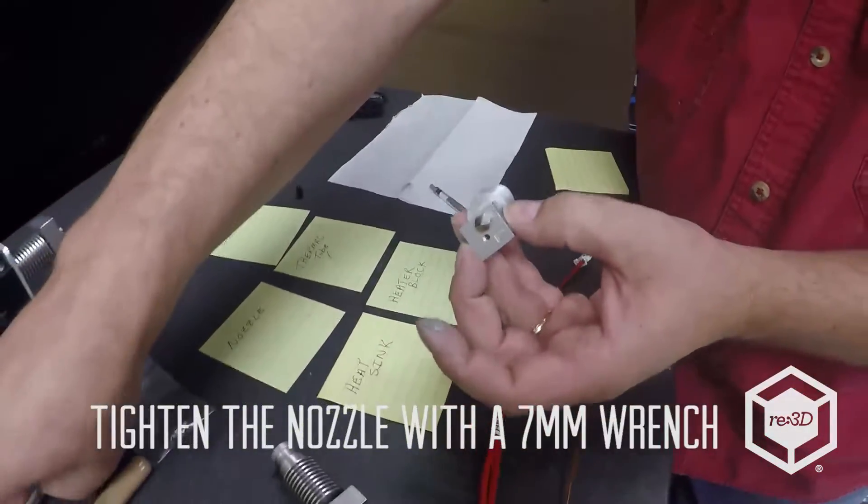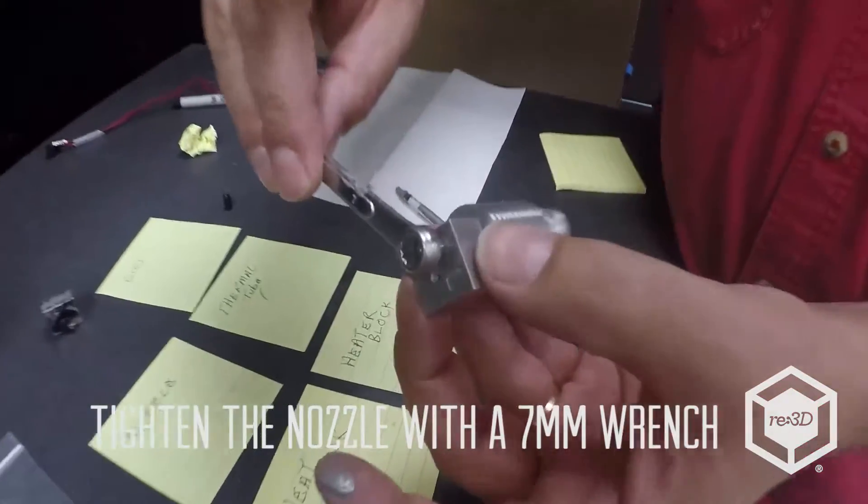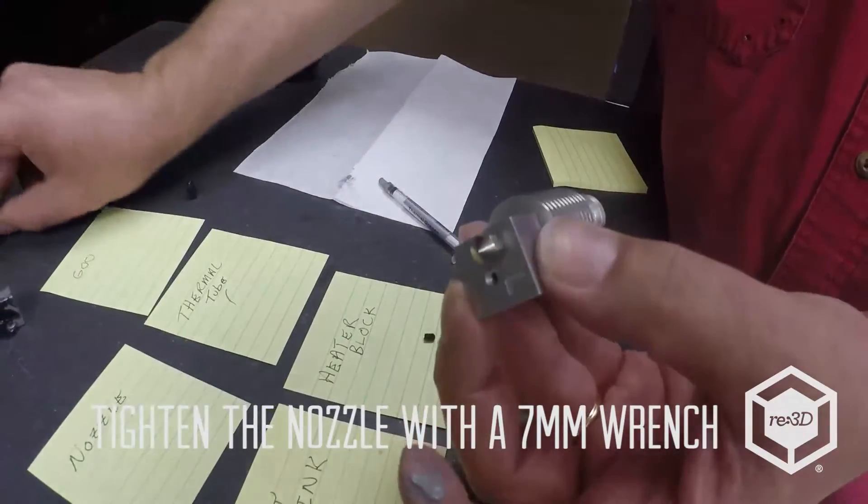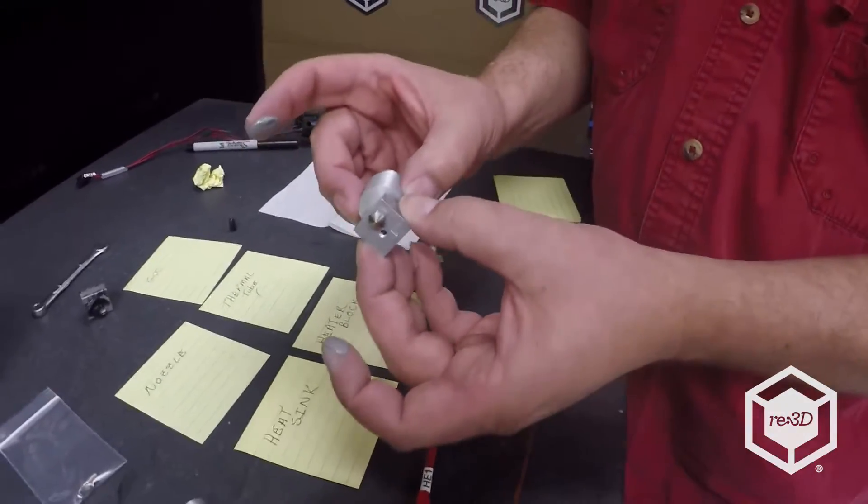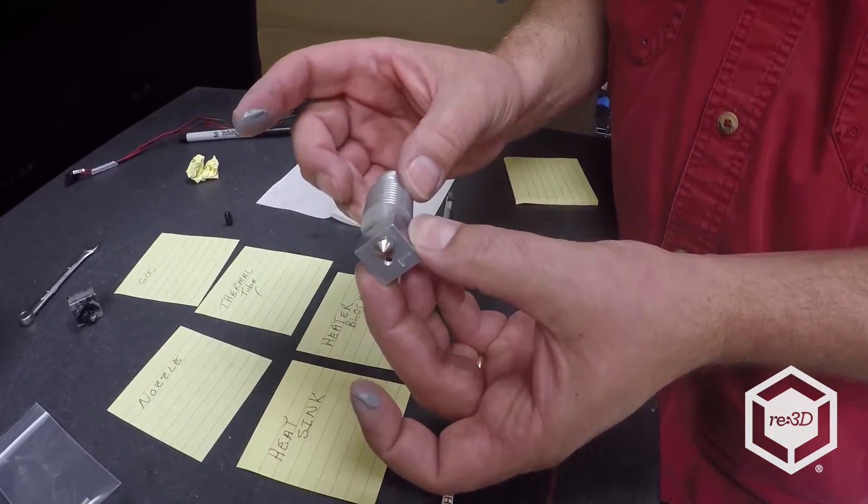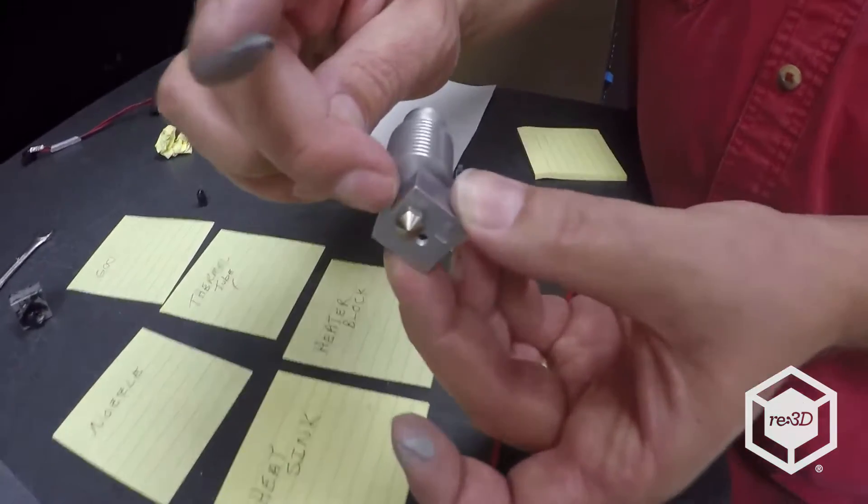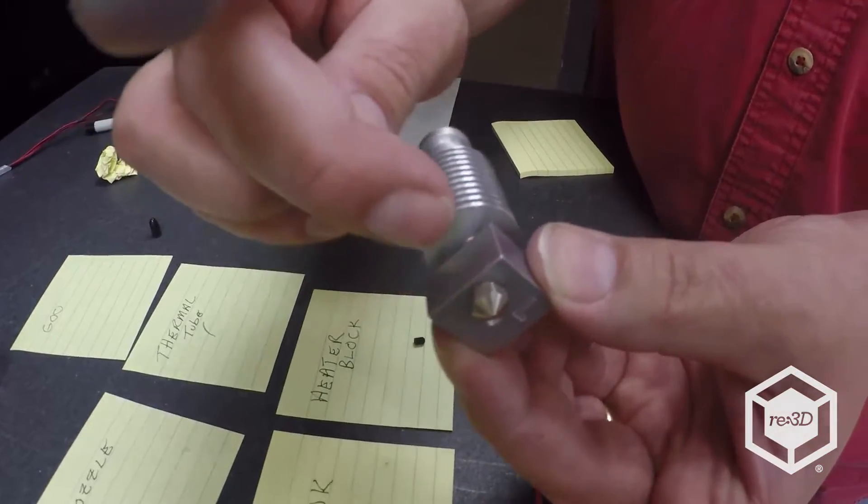So now it's actually fully assembled and ready to go. The one thing we will do is tighten it up. You can tighten it just with a wrench. We actually use a torque wrench here in the shop about 20-25 inch pounds just to give it a good snug and make sure it's not going to come out.